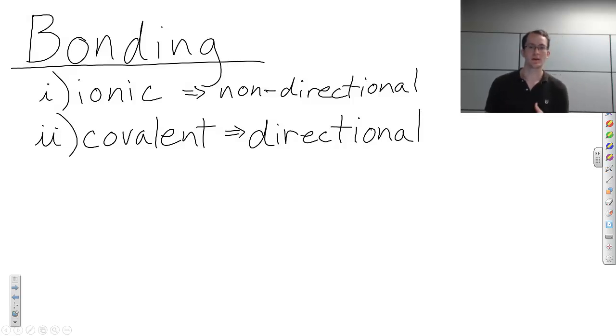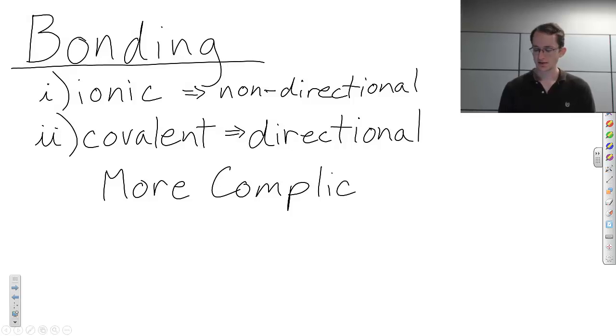And so the bond hybridization that's created from covalent bonding will force them to interact with atoms only at very specific angles with respect to other atoms. And we'll discuss that in a moment. So because of this different type of bonding compared to metals we will get more complicated crystal structures.